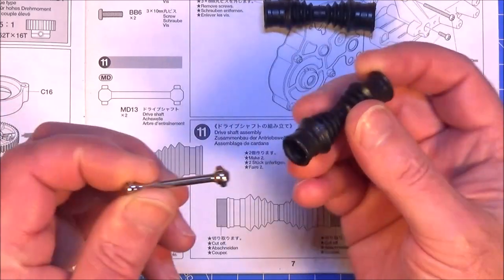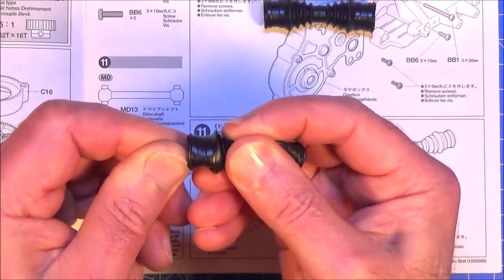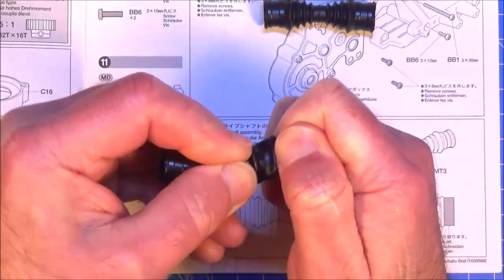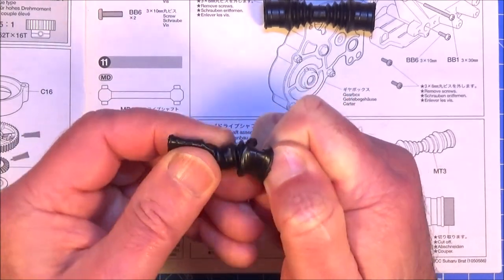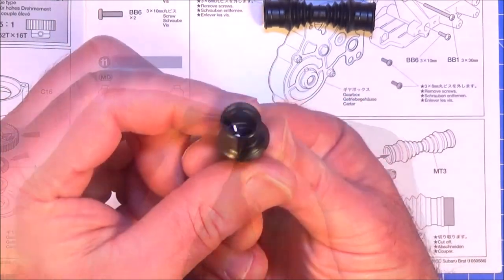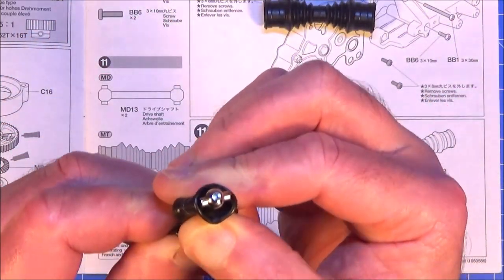So all we have to do now is force this dog bone through. It is quite tight I will say, just be careful not to puncture the rubber with the sharp edges of that dog bone. Okay so that's in, do two and get some AW grease on the ends.